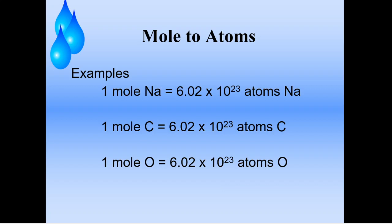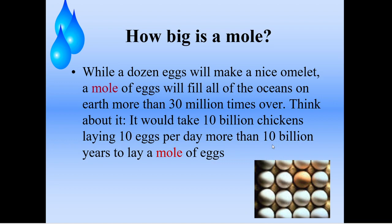They will have different grams though. One mole of sodium will always have 6.02 times 10 to the 23rd atoms, but it may not weigh one gram like carbon does. So let's think about this a little more — how big is a mole? How big is 6.02 times 10 to the 23rd?